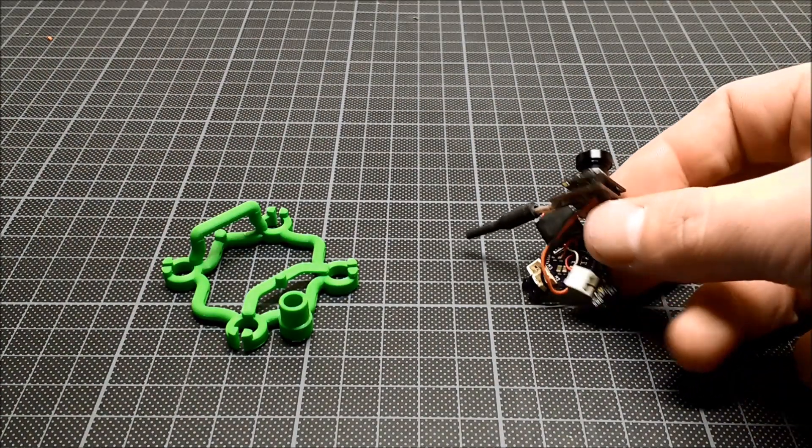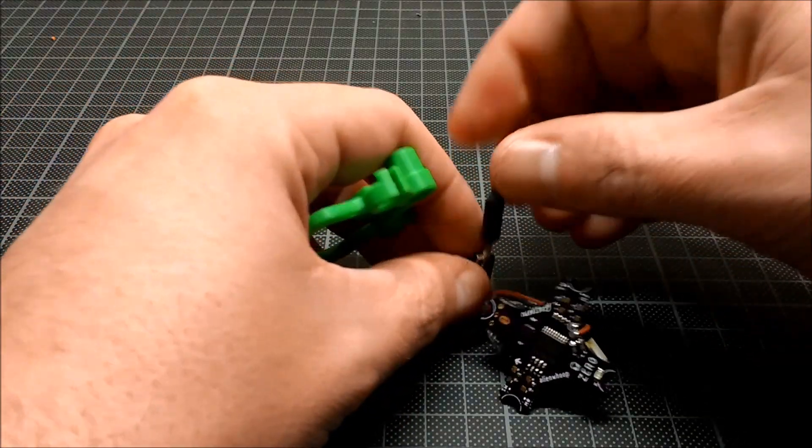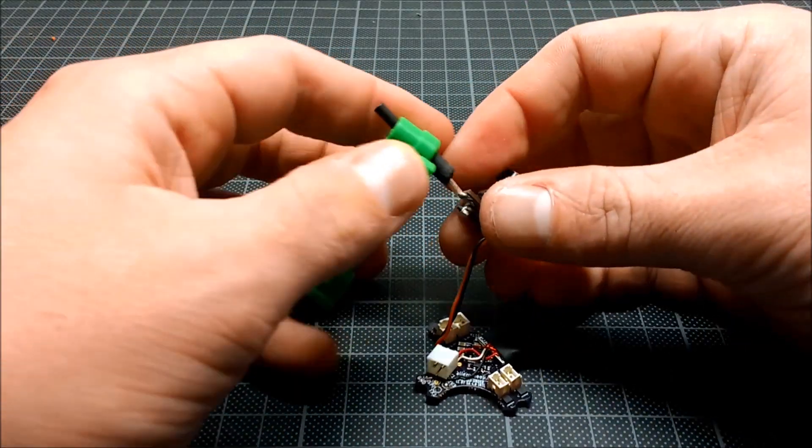Now let's start putting it together. For this example, I use an Alien Whoop Zero, which does pretty well in test flights. I only fly angle mode though, I never tried acro.